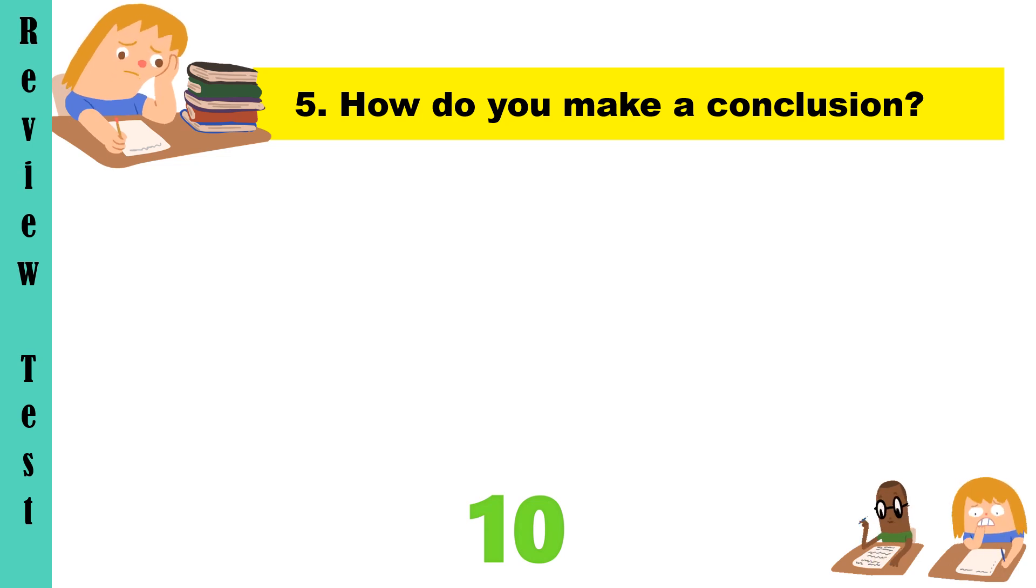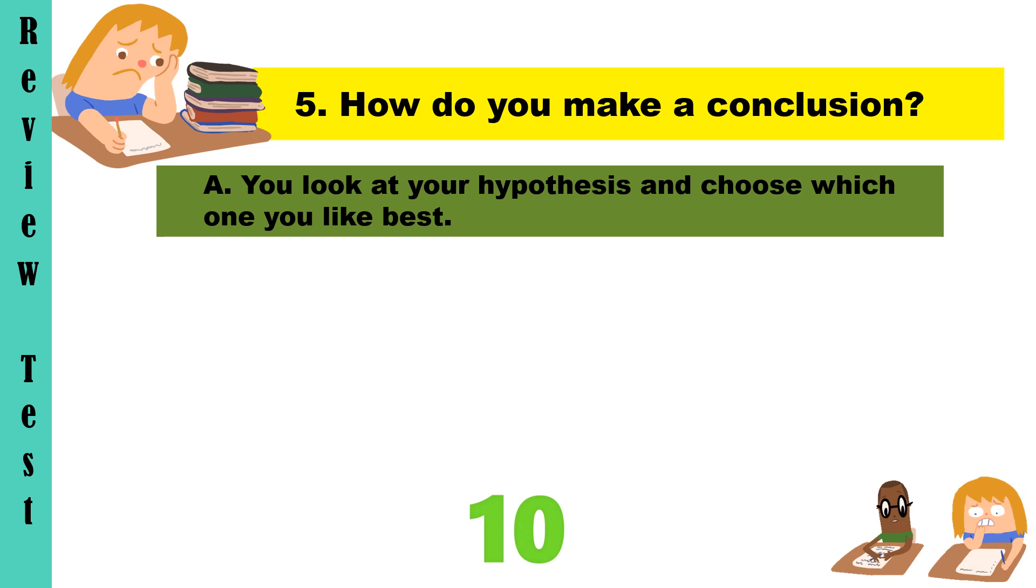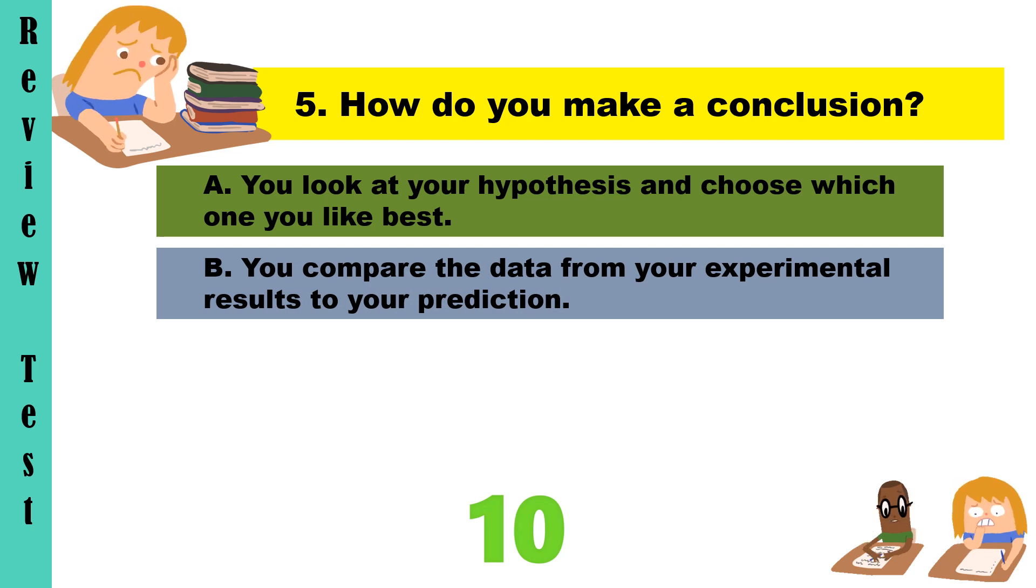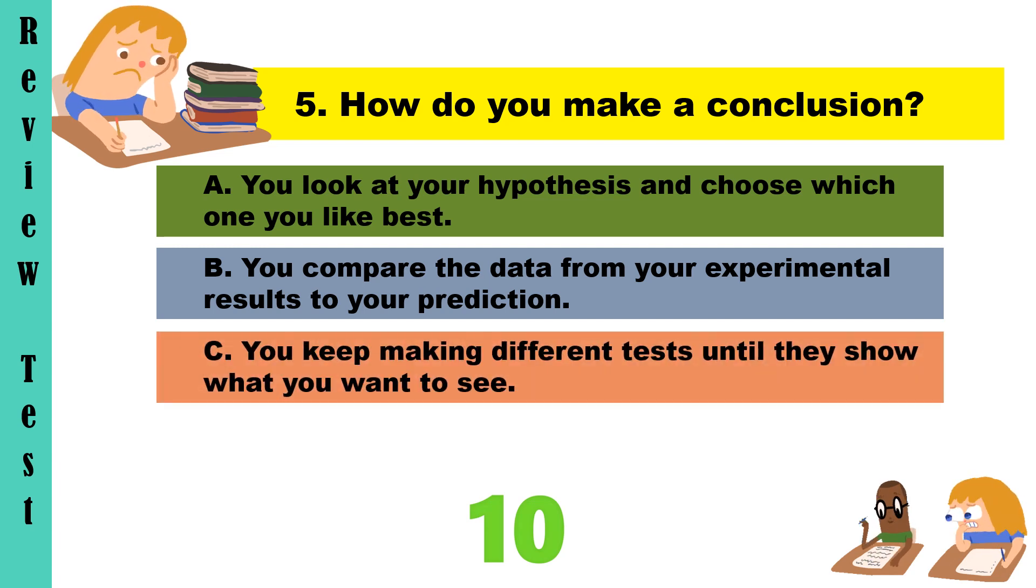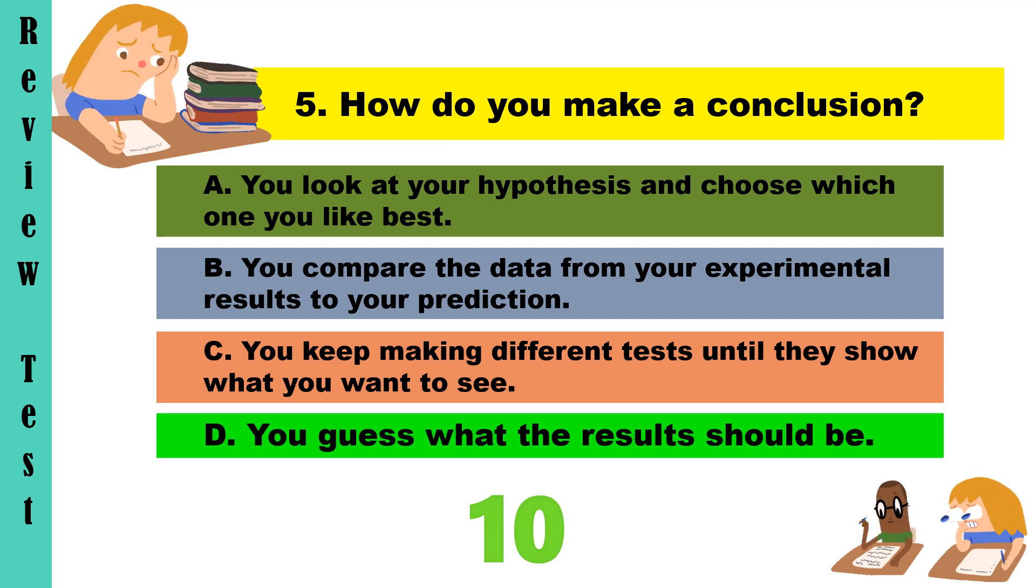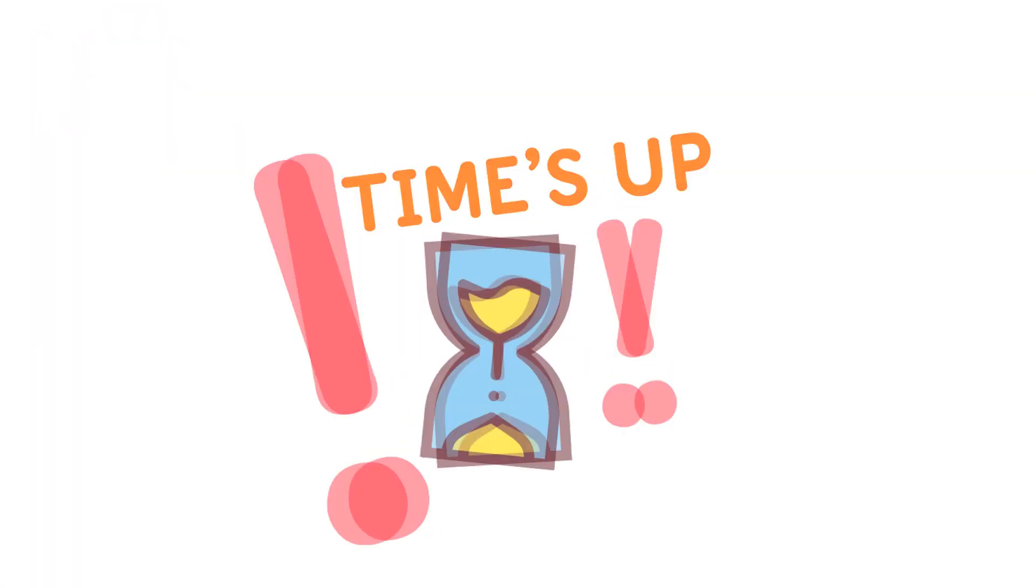Last question. How do you make a conclusion? A. You look at your hypothesis and choose which one you like best. B. You compare the data from your experimental results to your prediction. C. You keep making different tests until they show what you want to see. Or D. You guess what the results should be. Time's up. Let's check how well you remember and understand the lesson. You may check your own paper, but make sure to be honest.